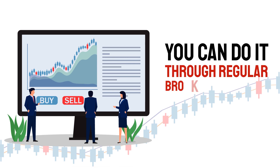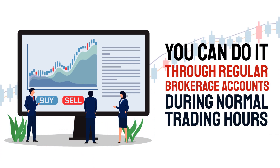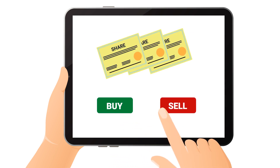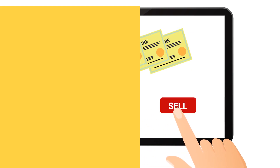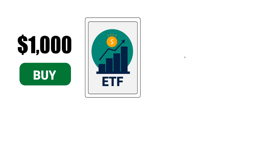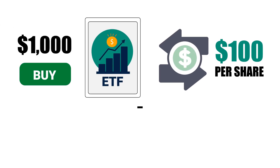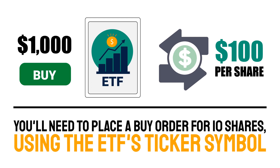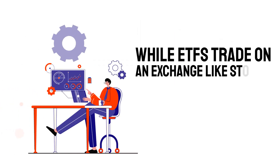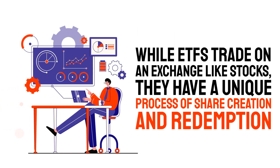You can do it through regular brokerage accounts during normal trading hours. When you place an ETF trade, you'll have to choose a certain number of shares to buy or sell, just like you would with a stock. For example, if you want to buy $1,000 of a particular ETF and it trades at $100 per share, you'll need to place a buy order for 10 shares using the ETF's ticker symbol. While ETFs trade on exchange like stocks, they have a unique process of share creation and redemption.